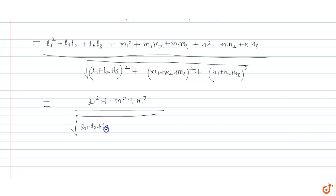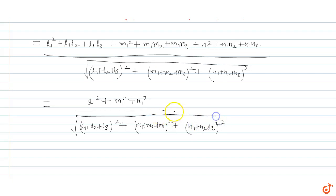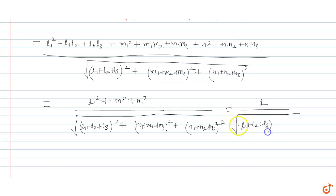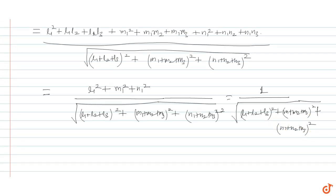The denominator is square root of (L1 plus L2 plus L3) whole square plus (M1 plus M2 plus M3) whole square plus (N1 plus N2 plus N3) whole square. Since L1 square plus M1 square plus N1 square equals 1 (sum of squares of direction cosines), we get cos alpha equals 1 divided by this denominator quantity.